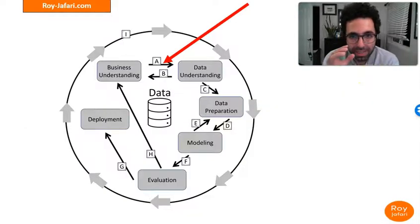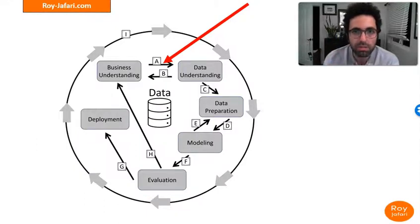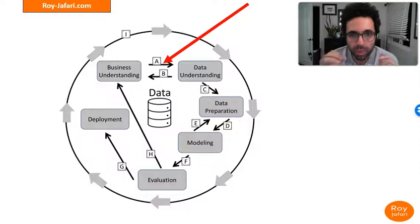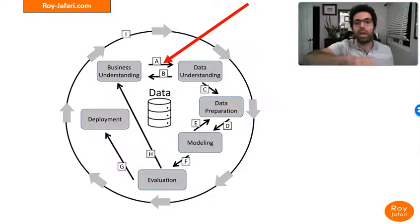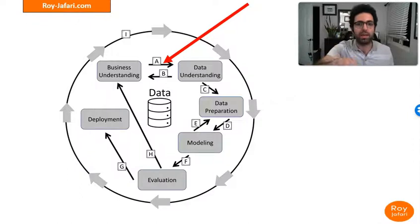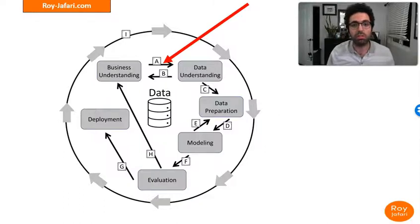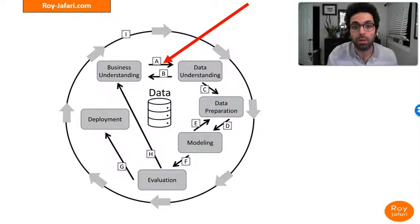Let's talk about the interaction between business understanding and data understanding. For us to make sense of the data, we have to understand where the data comes from and what is being collected. When we do the practice of data understanding, it teaches us more about the business understanding. This loop can circle many times to improve both your data understanding and your business understanding before you're ready to move to data preparation.